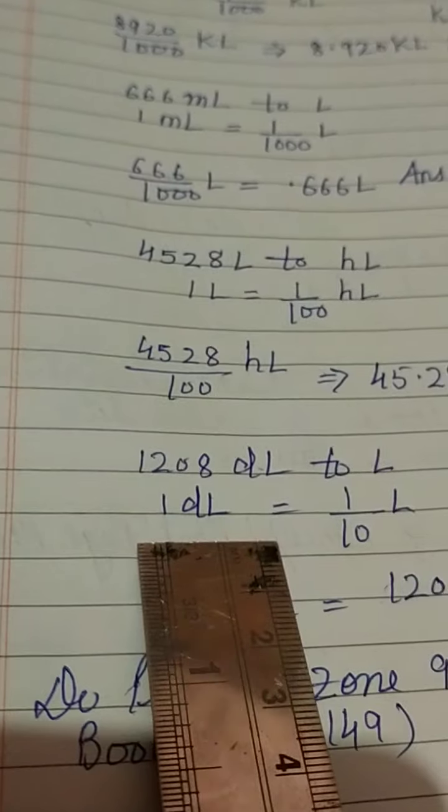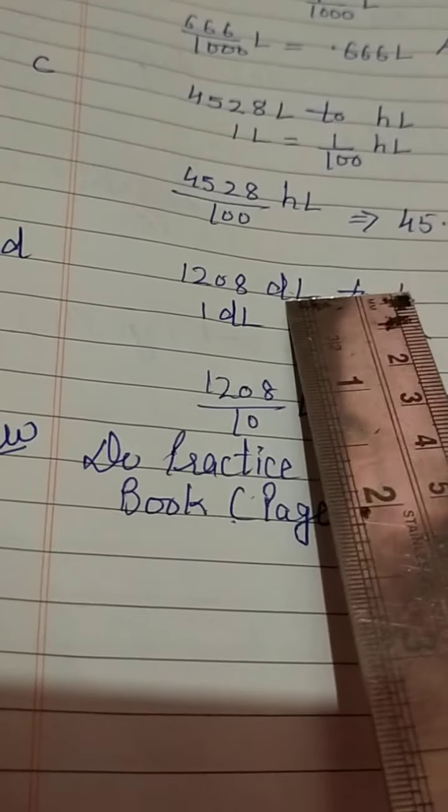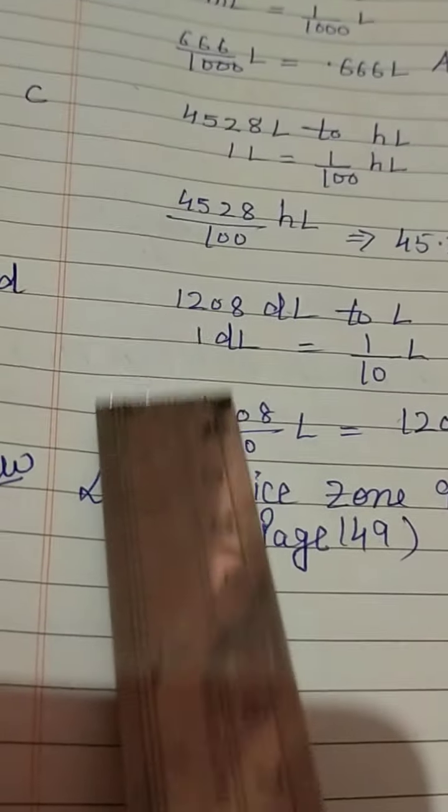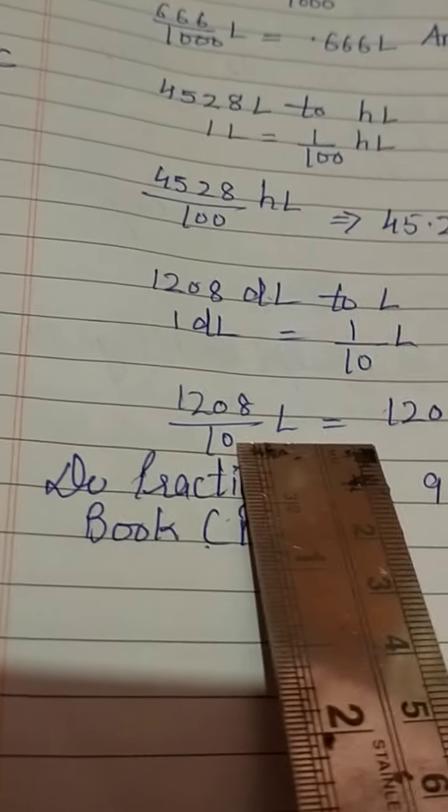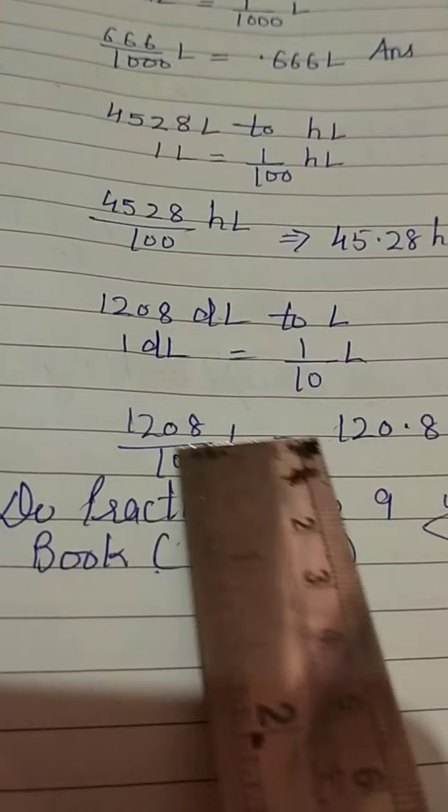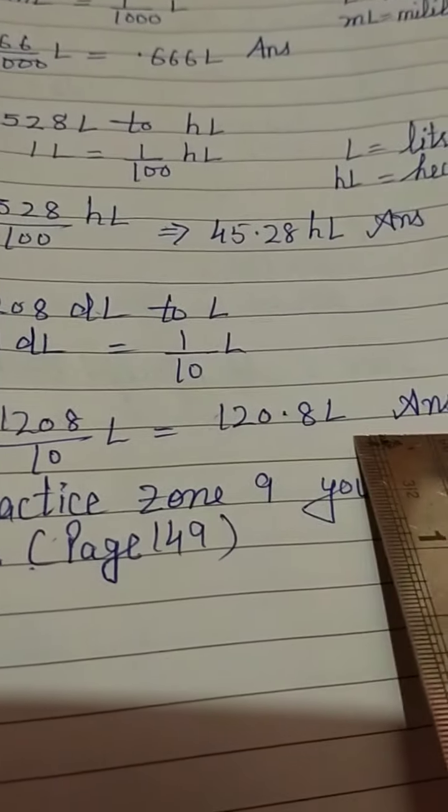So 1 dL is equal to 1 by 10 liter. Then in this question, in place of dL we will put 1 by 10 liter. So 1208 divided by 10 liter is equal to, again we will put decimal. 1 zero means decimal will come here: 120 decimal 8 liter will be our answer.